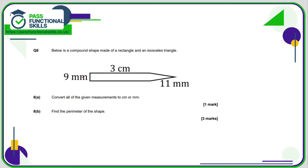Question 8: we need to convert measurements to centimetres or millimetres. I'll convert centimetres to millimetres so I only need to change one value. Multiply by 10: that side becomes 30 millimetres. This part is 11. Adding all the numbers together gives a total of 91 millimetres.